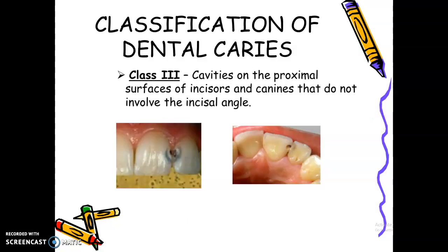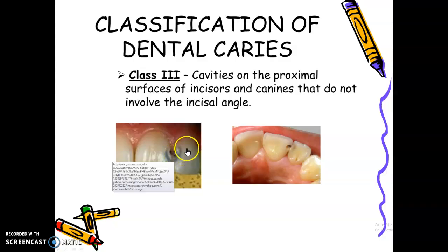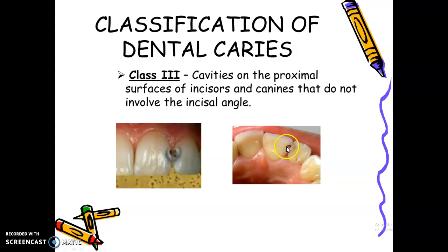Class 3 are cavities found on the proximal surface of incisors and canines — anterior teeth — that do not involve the incisal angle. It should not involve the incisal angle. Here you can see cavitation on the right picture, and on the lateral incisor, you can see a gray shadow, which means inside there's already caries.